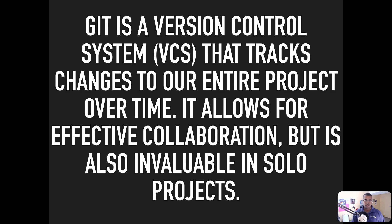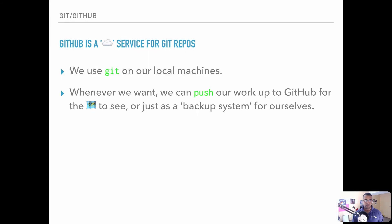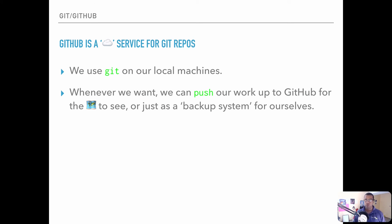We're going to use Git — a program inside the terminal on our local machines. When we're done working and want to push our project up to the cloud for backup and even for deployment so people can use our projects, we're going to use something called GitHub. We can actually tie that later on into a service called Netlify, but that's later on in the course.